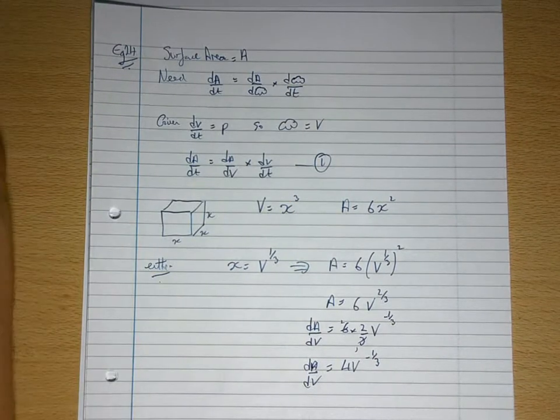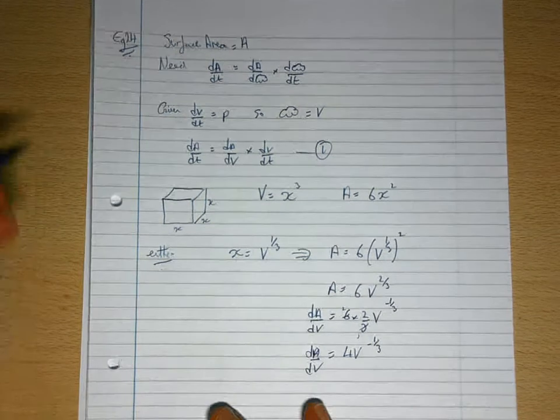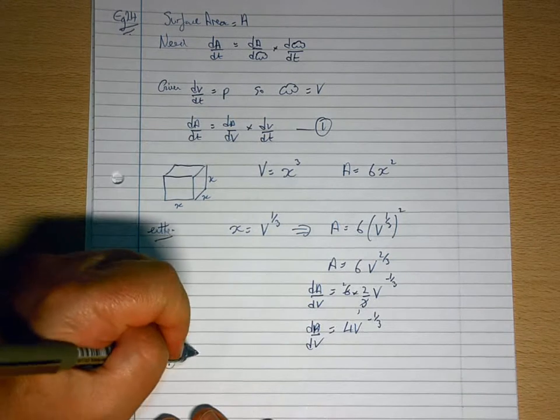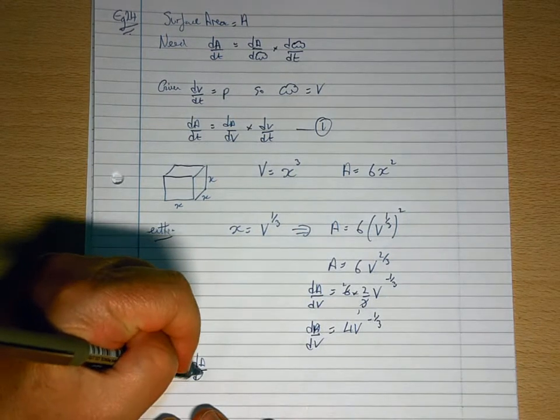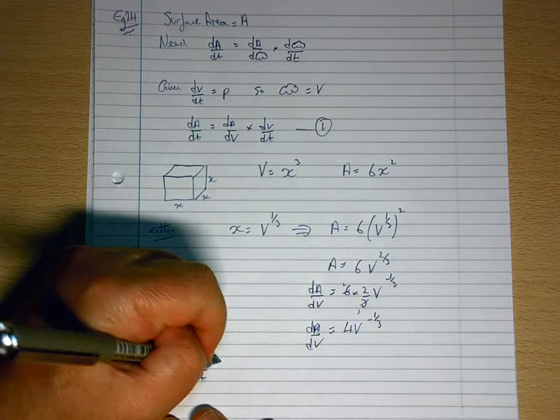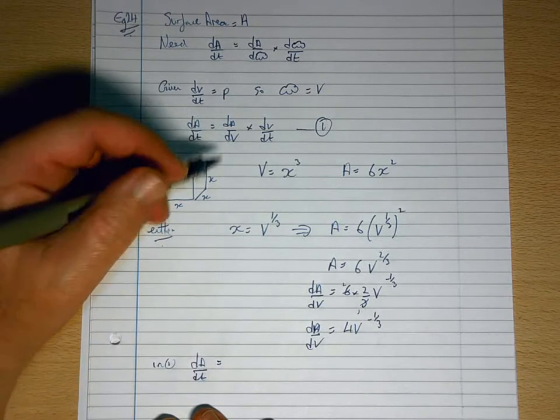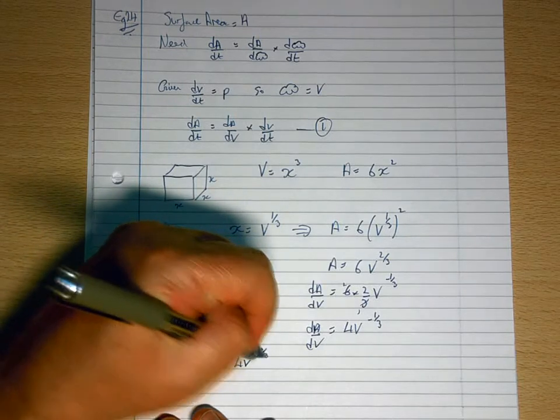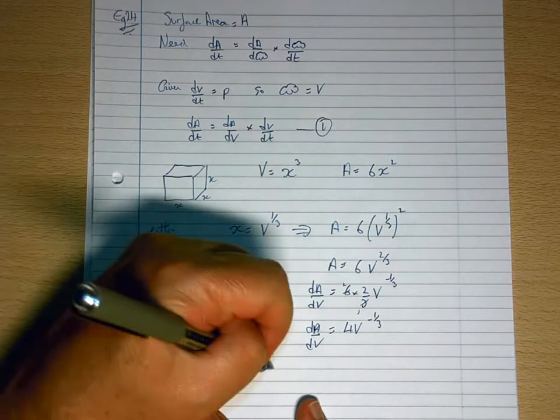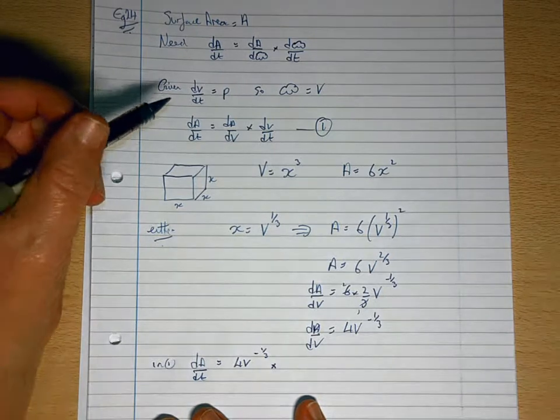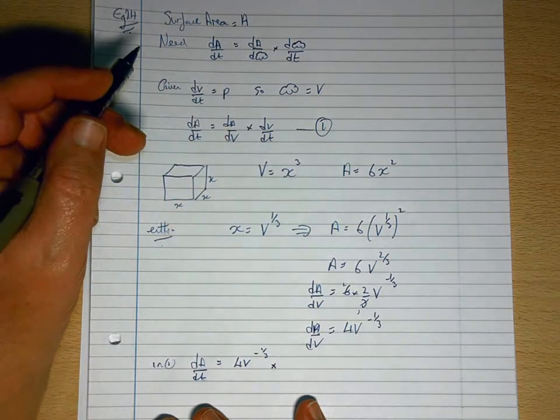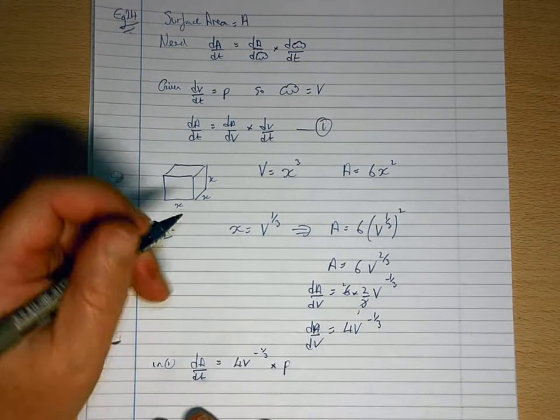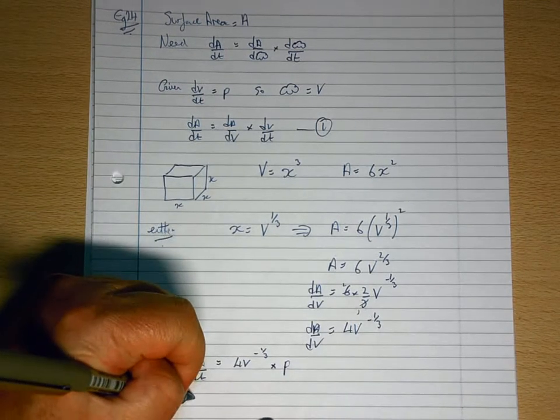So if I now put all of that into my chain rule equation, in equation 1, dA/dt equals dA/dV, which I've got is 4V to the minus 1/3, multiplied by dV/dt, which is p.